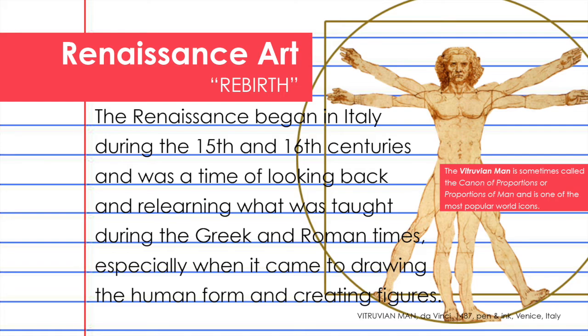Let's learn a little bit about Renaissance art. Renaissance is also known as rebirth. The Renaissance began in Italy during the 15th and 16th centuries and was a time of looking back and relearning what was taught during the Greek and Roman times, especially when it came to drawing the human form and creating the human figure. Here we see one of Leonardo da Vinci's most famous studies of human proportion, known as the Vitruvian Man.